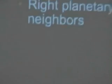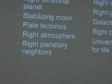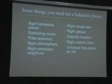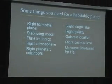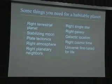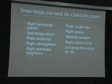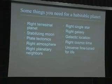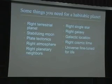Here are some more specifics of the kinds of things you need to have a habitable planet. You need the right kind of terrestrial planet — it can't be too small or too big. You have to hold on to an atmosphere. It has to be big enough to maintain enough heat in the interior to generate a magnetic field that can last a long time. You need a stabilizing moon that stabilizes the tilt of the Earth's rotation axis. Without a large moon, the Earth's rotation axis would wobble over a large range over thousands of years and lead to very large climate variations.